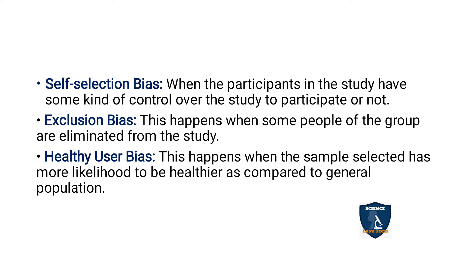Exclusion bias happens when some people of the group are eliminated from the study. You have selected some subjects but then eliminate them, thinking they are not satisfying the desired criteria. This is called exclusion bias — you yourself decide to exclude them.